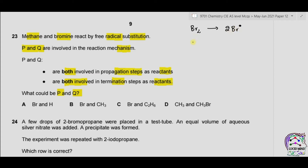In the second step, we have propagation, in which methane reacts with these radicals to form methyl radicals along with HBr. These methyl radicals can also react with Br2 to form methyl bromide along with bromine radicals. These steps continue until all hydrogen atoms in CH4 are replaced by Br.